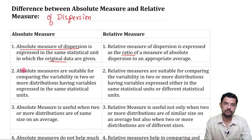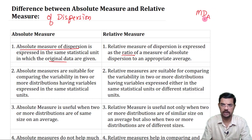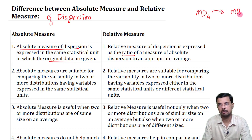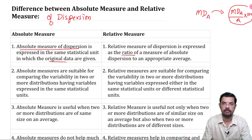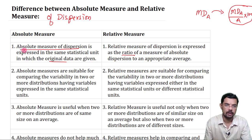For example, if mean deviation about some average A is MD, then the coefficient of mean deviation is defined as MD about A divided by A, multiplied by 100. This is how we define the relative mean deviation, also called the coefficient of mean deviation.